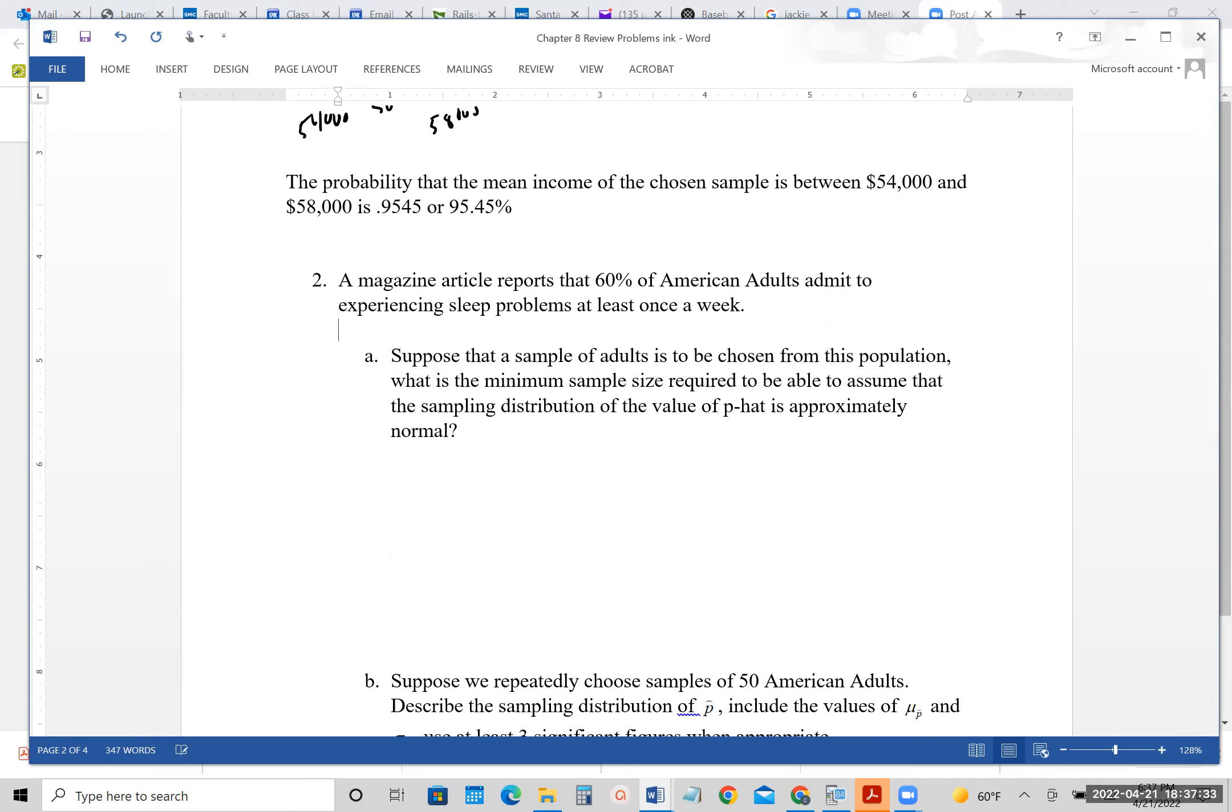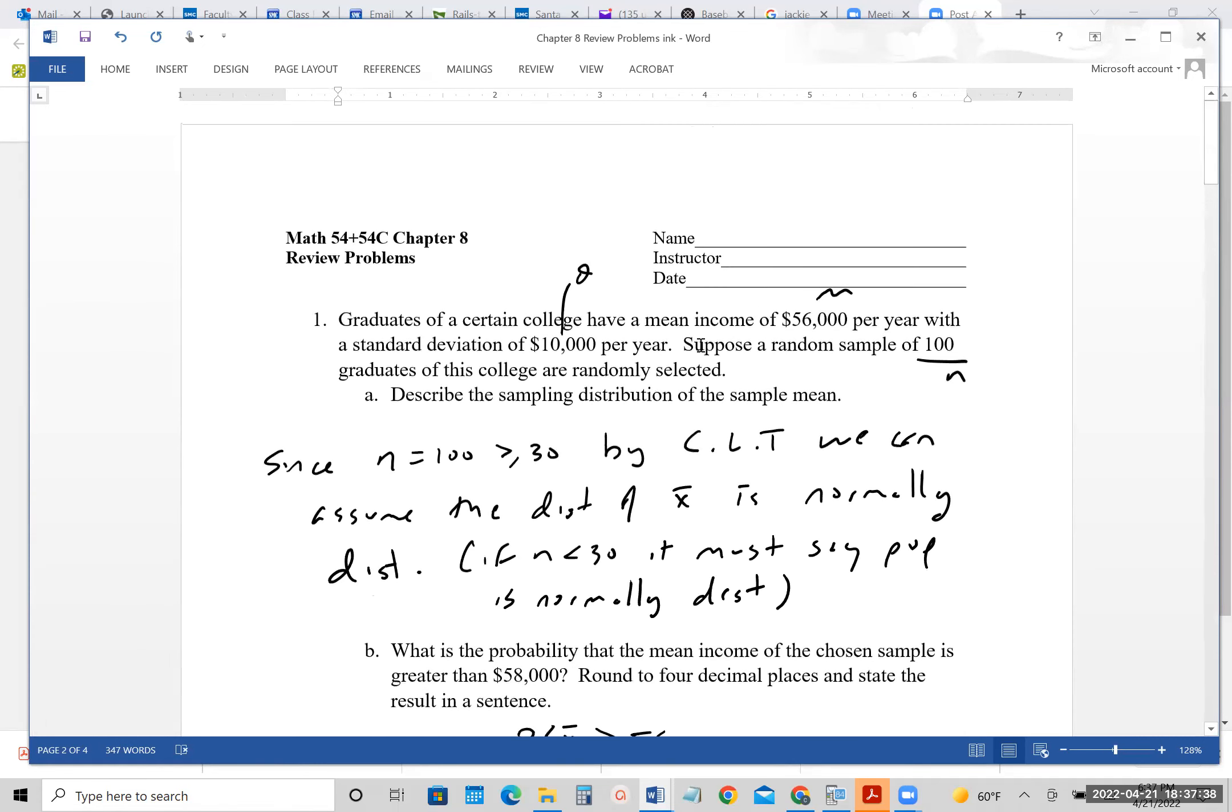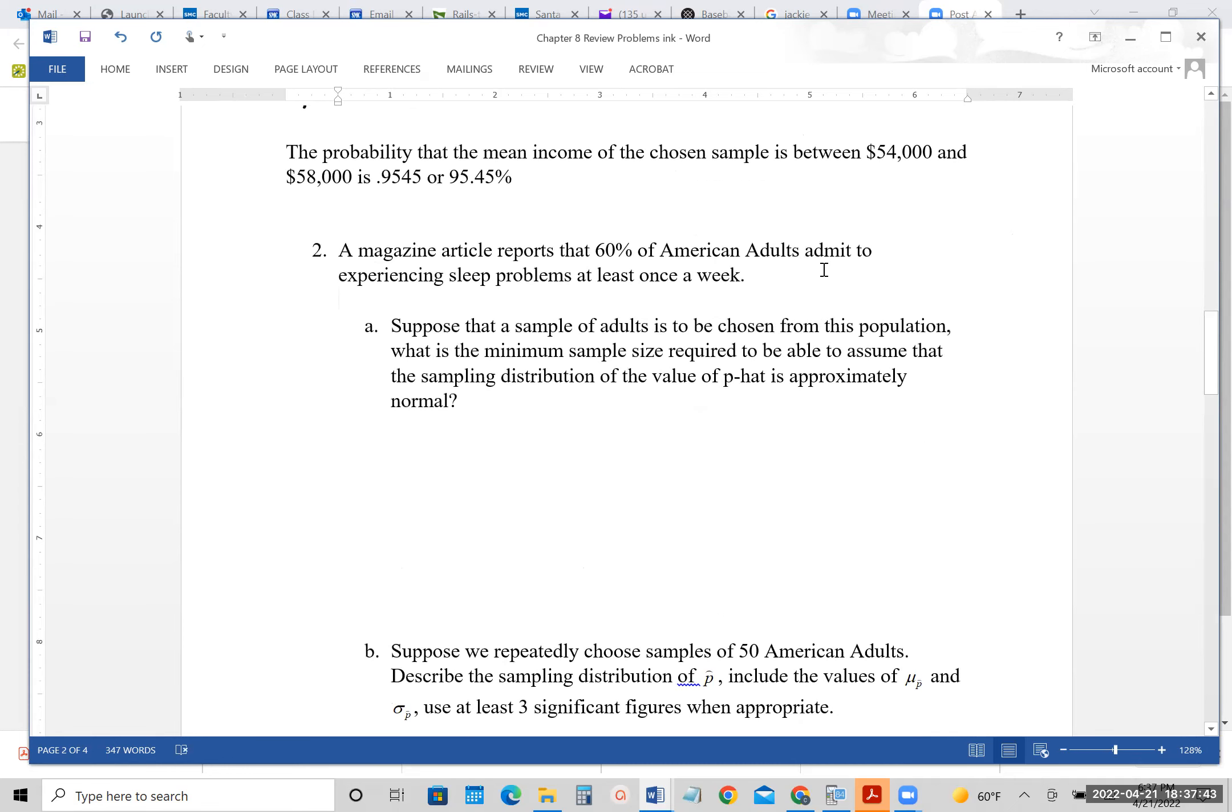So that was an 8.1 question about the mean. And if we scroll down here, we'll see the 8.2 question will be about the proportions. A magazine article reports that 60% of American adults admit to experiencing sleep problems at least once a week. So that 60% right here is our P. Suppose the sample of adults to be chosen is from this population. What is the minimum sample size required to assume that the sampling distribution of P-hat is approximately normal?